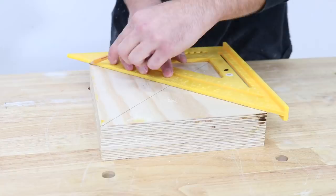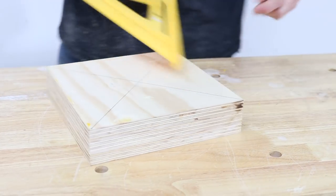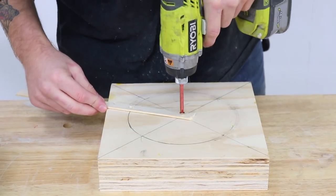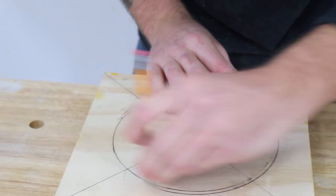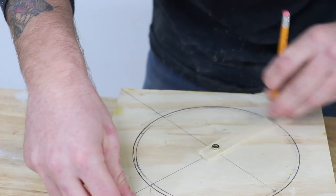One hole a screw would go into in the center of the block and the other a pencil. Then I could spin that around and use it to mark out a perfect circle that I would be using to carve out my recess.